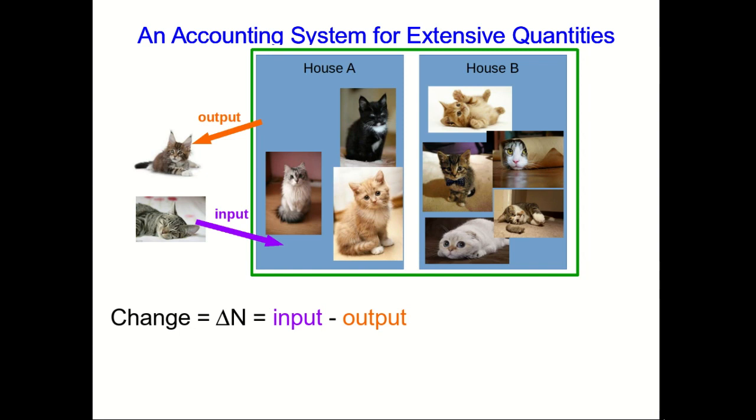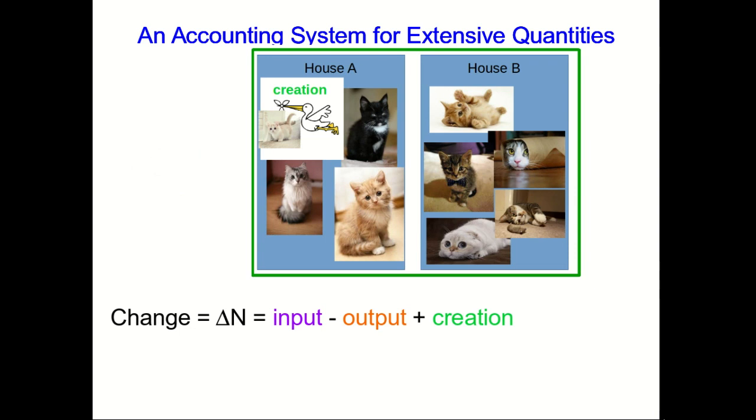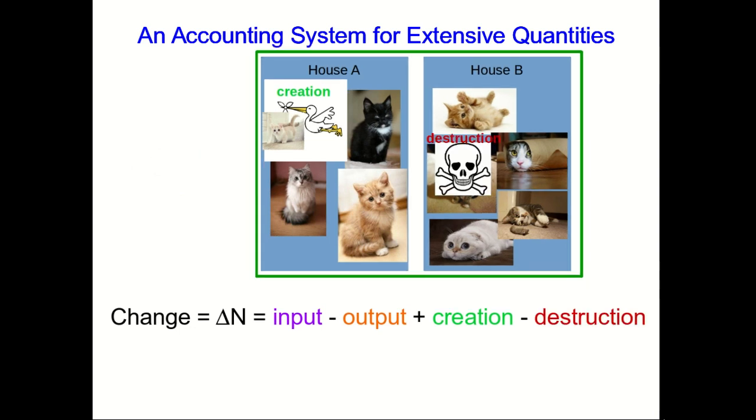But those aren't the only processes that change the number of cats in our houses. There is, of course, a process whereby cats are created, and so we have to account for that. And regrettably, there's also a process whereby cats are destroyed. So overall, between two times when we count up the number of cats in the house, there will be a change, and it has to be the input minus the output plus the number created minus the number destroyed.